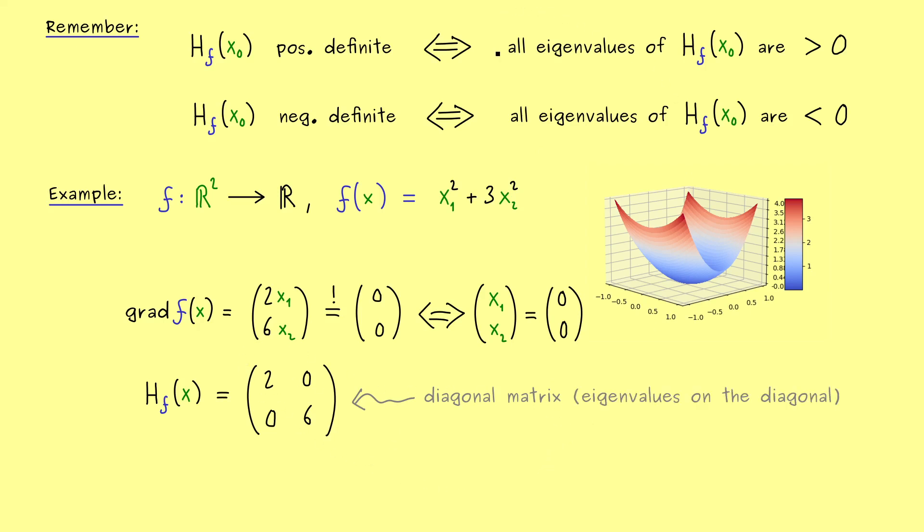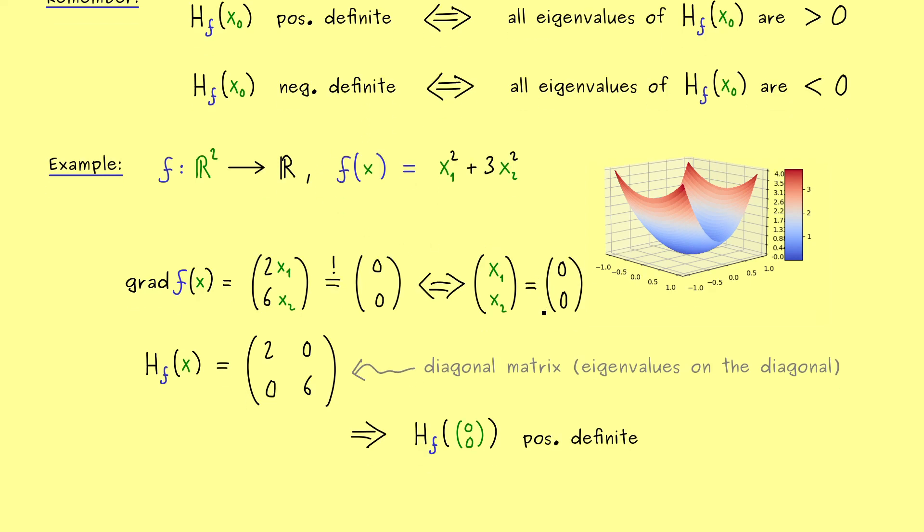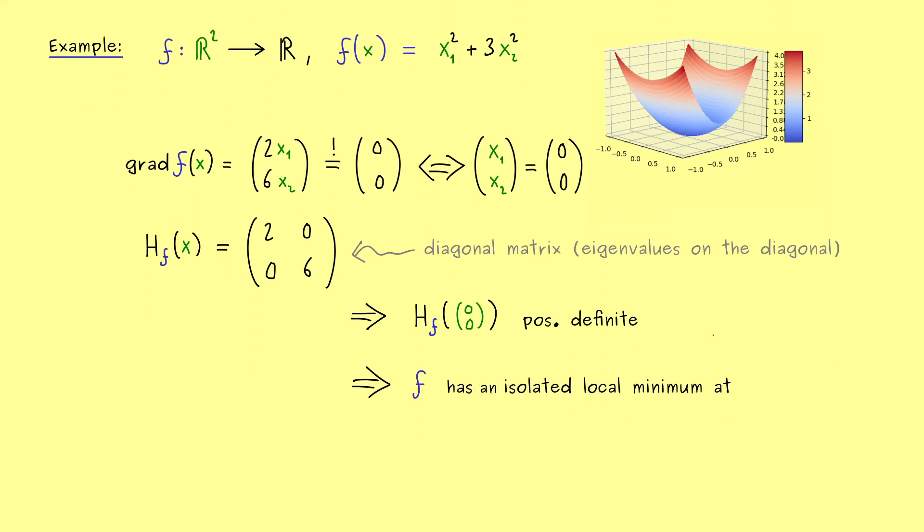Therefore checking our criterion here is now very simple because we immediately see we only have positive numbers on the diagonal. In other words this Hessian matrix is a positive definite matrix no matter which point x we put in. In particular it's a positive definite matrix if we put in the origin. Hence now we can apply our sufficient condition from the start of the video and conclude that we have an isolated local minimum at the origin. Moreover together with some knowledge of the function we see it's also the global minimum. Okay so this is the result, we have our minimum at (0,0). Indeed here I can tell you if we talk about points in the domain sometimes we write them horizontally like that. However of course this does not make a difference at all.